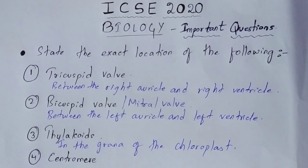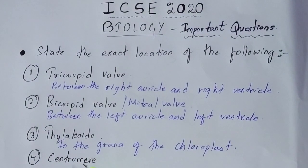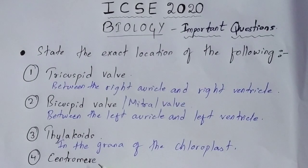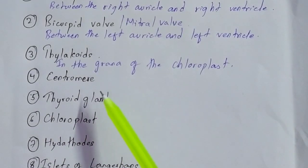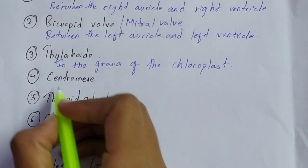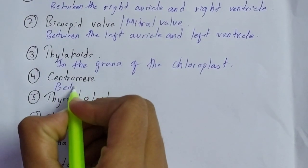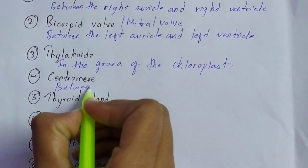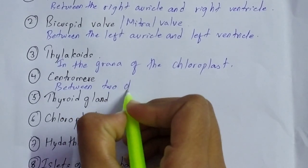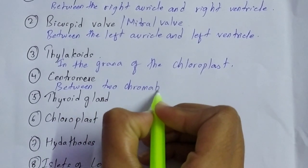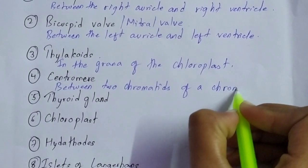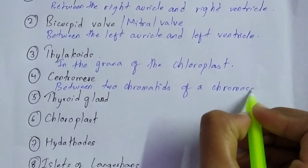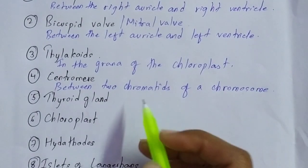The next one is centromere. This is from your Human Chromosomes chapter, that is Chapter Number 2. The centromere is located between the two chromatids of a chromosome — that is the exact location of the centromere.